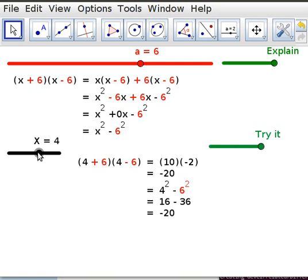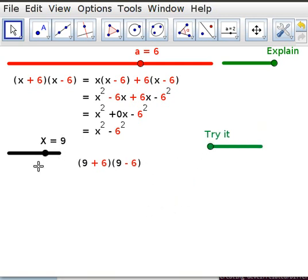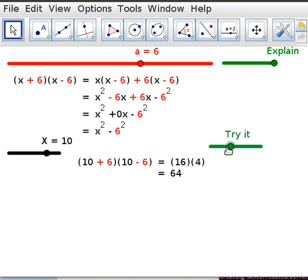Now I'm going to try a different value of x. Maybe we'll try, well 9, we'll try 10. 10 plus 6 multiplied by 10 minus 6, you've got 16 multiplied by 4, which is 64. And then if you do it the other way, using the x squared minus 6 squared, 10 squared minus 6 squared is 100 minus 36, which is 64.